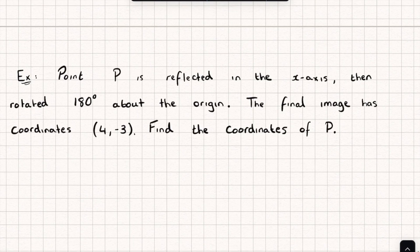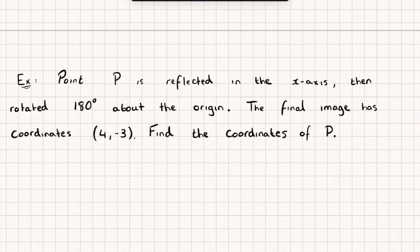So let's have a look at this question here. So a point P is reflected in the x-axis and then it's rotated 180 degrees about the origin. The final image has coordinates 4, negative 3. Find the coordinates of P. So the first thing I'm going to do is find my matrix that represents a reflection in the x-axis and I'll call this matrix A.